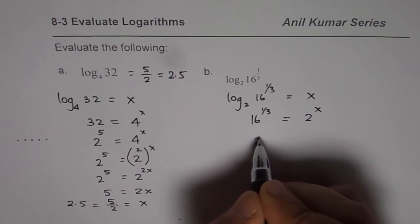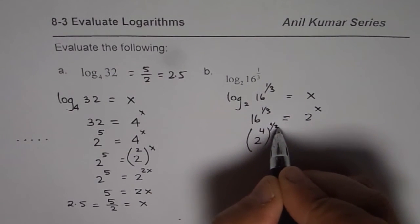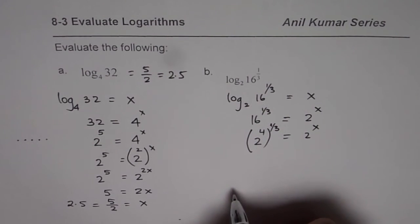16 can be written as 2 to the power of 4, right? So we have 2 to the power of 4 to the power of 1 over 3, which should be equals to 2 to the power of x.